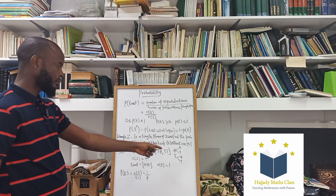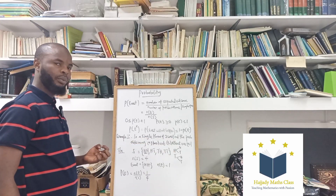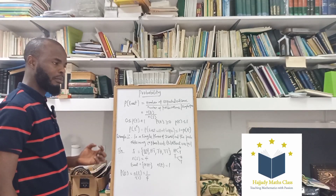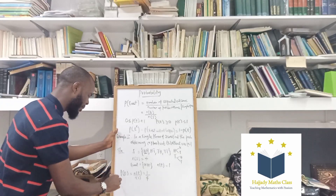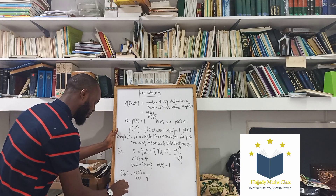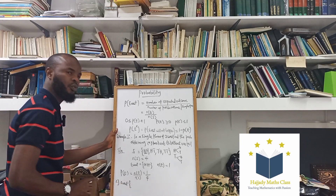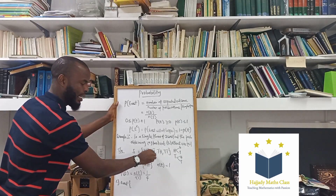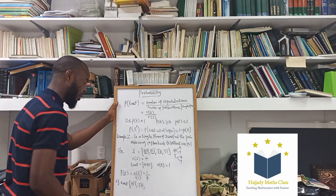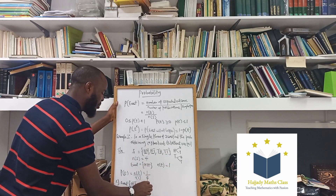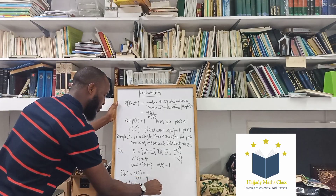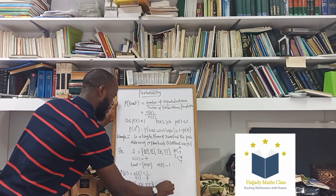For the second question: at least one tail. The word 'at least' in probability means minimum; if it were 'at most,' it means maximum. So at least one tail means a minimum of one tail. The expected outcomes are: HT — tail appears once; TH — tail appears once; or TT — tail appearing twice. Since we said minimum of one tail, it can be one tail or two tails. The number of expected outcomes is three.